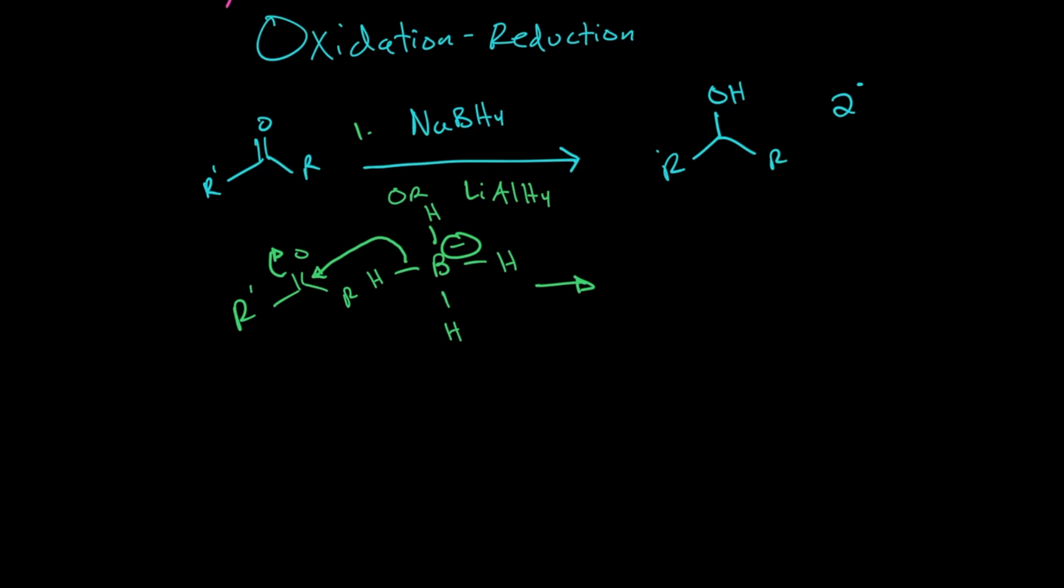So when that happens, let's say this is step one. When that happens, we get R, O minus R, and a new hydrogen in here. If I do step two, H3O plus, I can take one of these oxygens, grab a hydrogen from my H3O plus, and that's going to give us R, O, H, just like that. And that gave us our secondary alcohol. We also get some water.